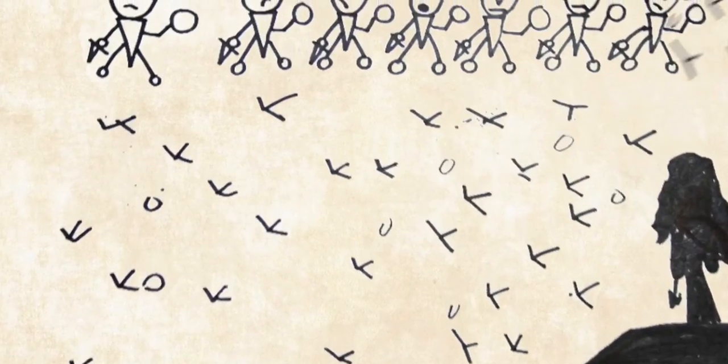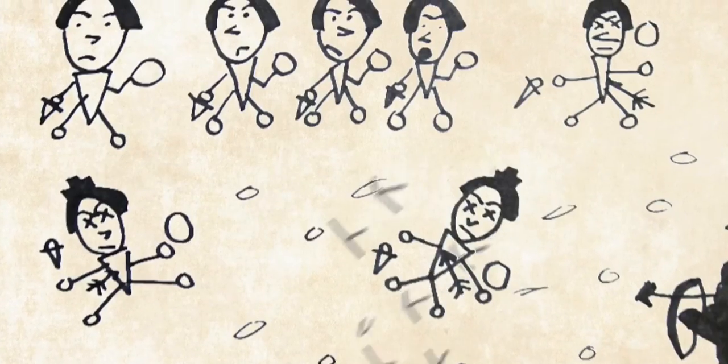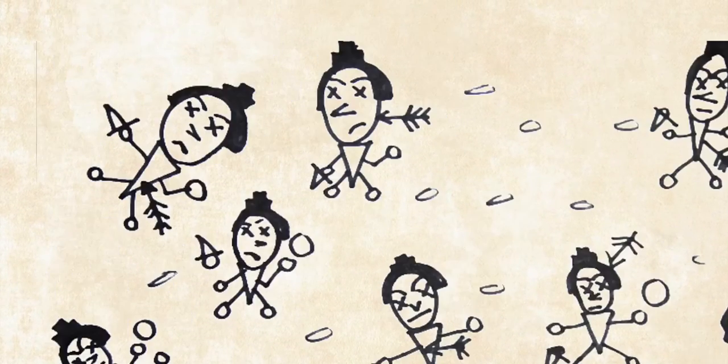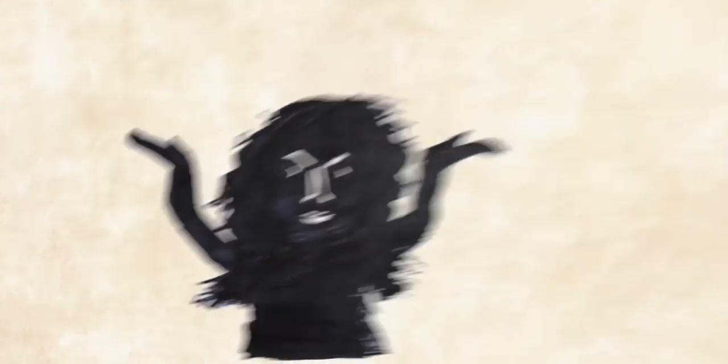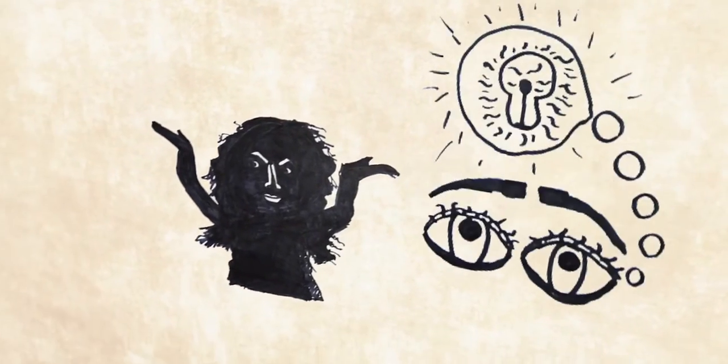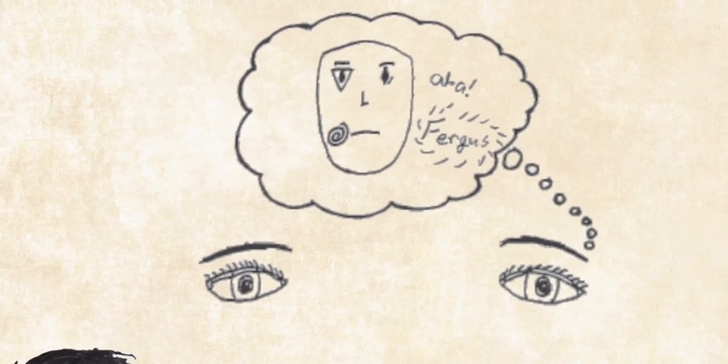But Cú Chulainn was having none of it and kept beating the life out of people. So Maeve had one final plan. Hmm, he's beat everyone else. Time to bring in his stepdad.